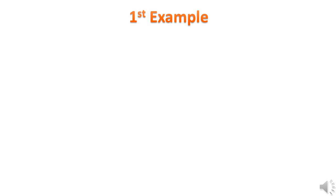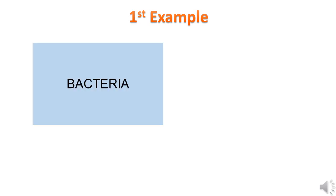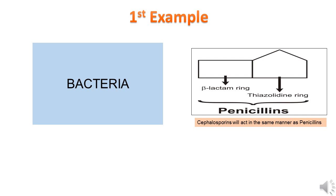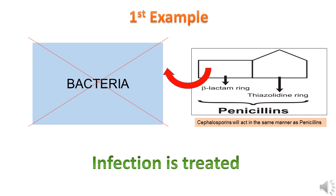Consider the first example. If there is a bacteria and there is antibiotic penicillin, penicillin has a beta-lactam ring. This beta-lactam ring will kill the bacteria. Therefore, the infection is treated.